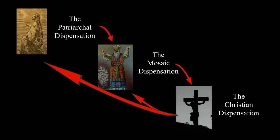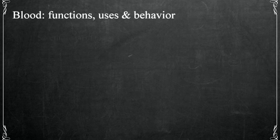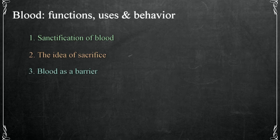There are several elements that will lead us directly to the sacrifice of Christ, but none of them are as intimately linked to not only Jesus but the entire narrative. As we develop this lesson I hope you'll begin to see those connections and deepen your awareness of the diversity and presentation of the symbolic forms we're studying. In order to appreciate this figure we need to identify its functions, uses, and behavior in the scriptures. There are five of these: the sanctification of blood, the idea of sacrifice, blood as a barrier, blood as an agent of sanctification and purification, and blood and redemption.